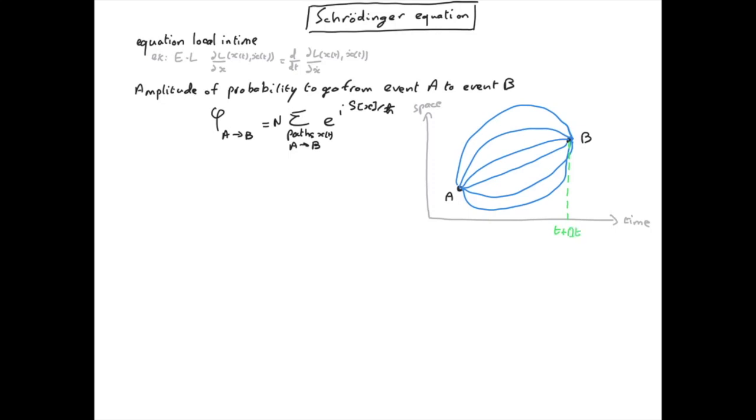The question is now what is the amplitude of probability to find the particle in B, and we don't care where it started from. We just want to know if we have a chance to find the particle in B or not.